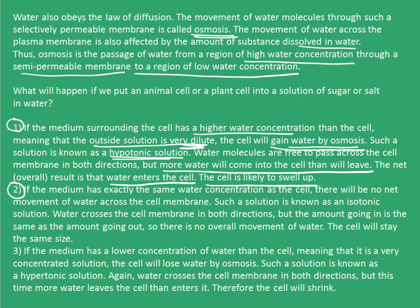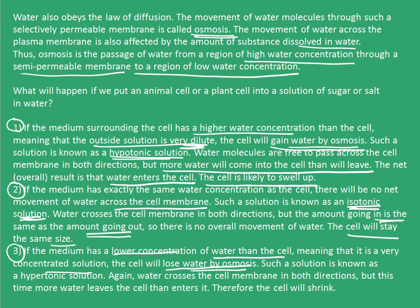The second case: if the medium has exactly the same water concentration as the cell, there will be no net movement of water across the cell membrane. Such a solution is known as the isotonic solution. Water crosses the membrane in both directions, but the amount going in equals the amount going out, so the cell stays the same size. The third case: if the medium has a lower concentration of water than the cell, meaning it is a very concentrated solution, the cell will lose water by osmosis. Such a solution is known as a hypertonic solution. More water leaves the cell than enters, and therefore the cell will shrink.